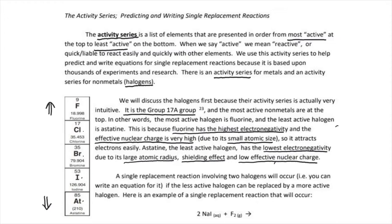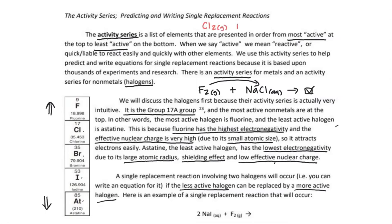A single replacement reaction involving two halogens will occur if the less active halogen can be replaced by a more active halogen. For example, fluorine reacting with sodium chloride in solution — that reaction will happen because fluorine is more active than chlorine, and we would be able to predict products. However, if you had the opposite — chlorine gas reacting with sodium fluoride solution — that equation would not happen because chlorine is lower than fluorine and would not be able to replace fluorine.